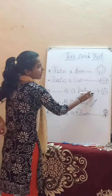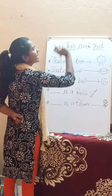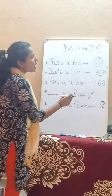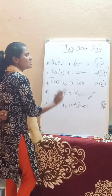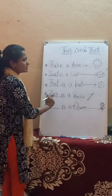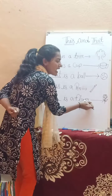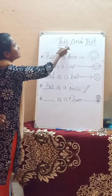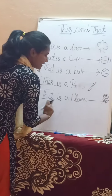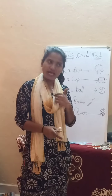Blank is a ball — the arrow shows it is far away, so we use 'that': that is a ball. This is a pen. Blank is a flower — the arrow shows it is near, so we use 'this': this is a flower. That is the thing we have to use.